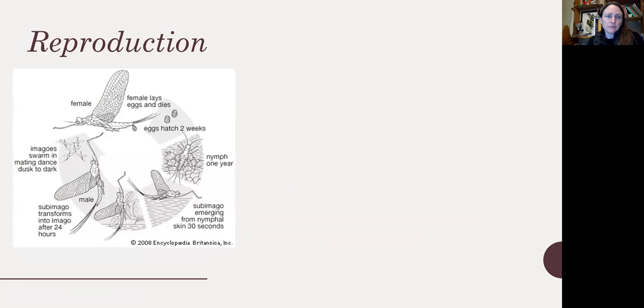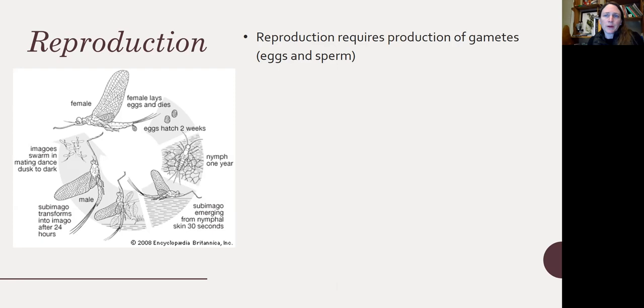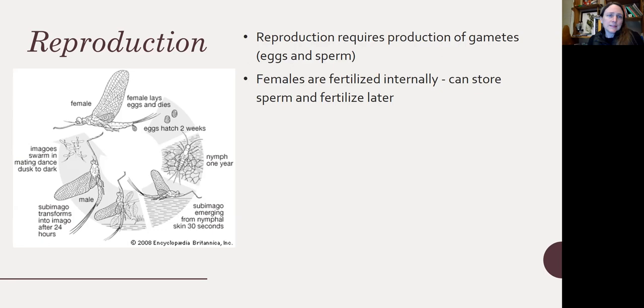In terms of insect reproduction, here's a life cycle showing a female laying fertilized eggs, eggs hatching into nymphs, nymphs turning into — in the case of a mayfly — a sub-imago, and then the sub-imago transforms into an imago after about 24 hours. That imago is then able to mate and reproduce, laying eggs if it's a female and producing sperm if it's male. Reproduction requires the production of gametes — either eggs or sperm. Females are fertilized internally, and some species can store sperm to fertilize their eggs later.